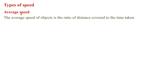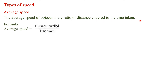Average speed: the average speed of an object is the ratio of distance covered to the time taken. Its formula is: average speed = distance traveled ÷ time taken, or V_avg = ΔS / ΔT. Here we subtract the final distance from the initial distance and the final time from the initial time to get the average speed.